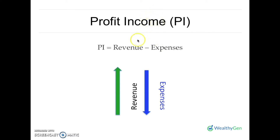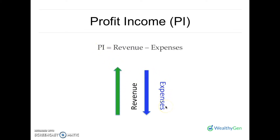So how do you maximize your profit income? Your focus should be to increase your revenue and decrease your expenses, because it's only when your revenue exceeds your expenses that you have something left as your profit income. So your strategy should be to increase your revenue and decrease your expenses. Here are two pointers: increase your revenue and reduce costs and expenses. To achieve this, consider these five important factors — products and services, price, promotion, customers, and vendors — which help you either increase your revenue or reduce your cost.